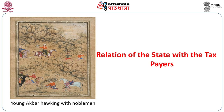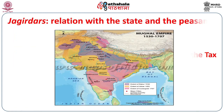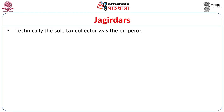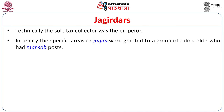It is interesting to note the relationship of the state and the taxpayers. Let us move to the concept of Jagirdars. Technically, the sole tax collector was the emperor. In reality, specific areas or Jagirs where the land was divided into tax-paying units were granted to a group of ruling elite who held mansabs or military ranks.